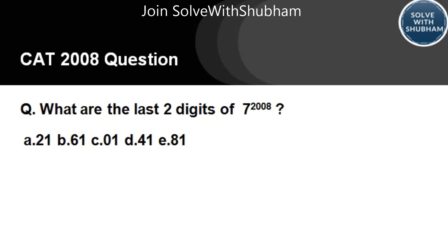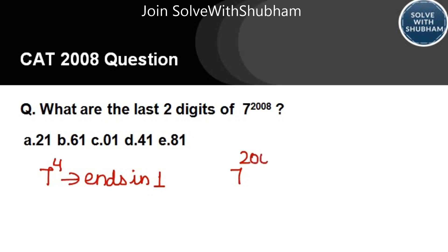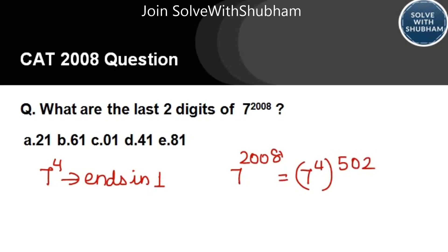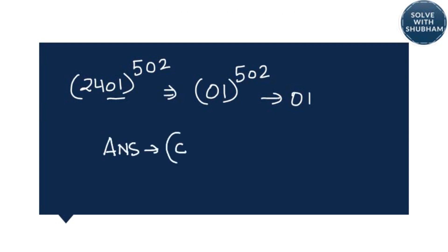Now this is a CAT 2008 question. The question asks: what are the last two digits of 7 to the power 2008? We know 7 power 4 ends in 1, so we write 7 power 2008 as 7 to the power 4, raised to 502. The last two digits of 7 power 4 are 01, since 2401 — we are only concerned with the last two digits. So 01 to the power 502 is still 01. The answer is option C: 01.